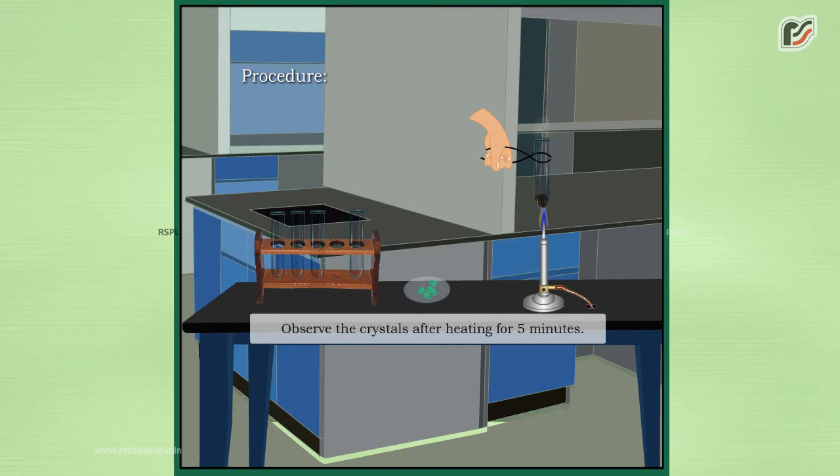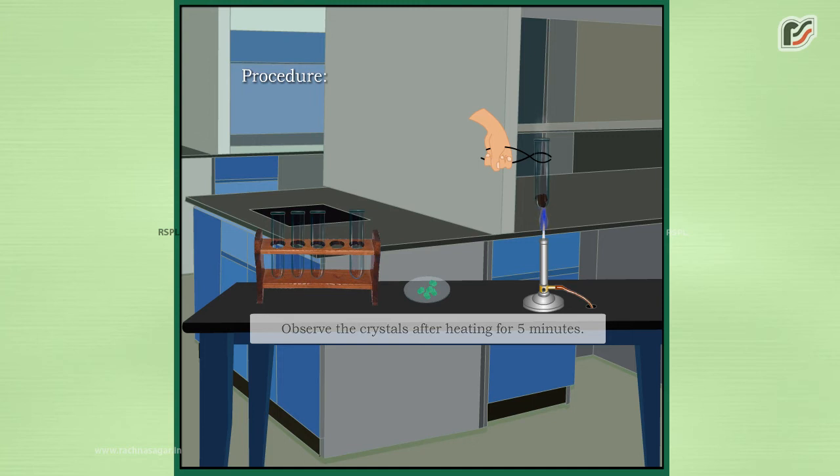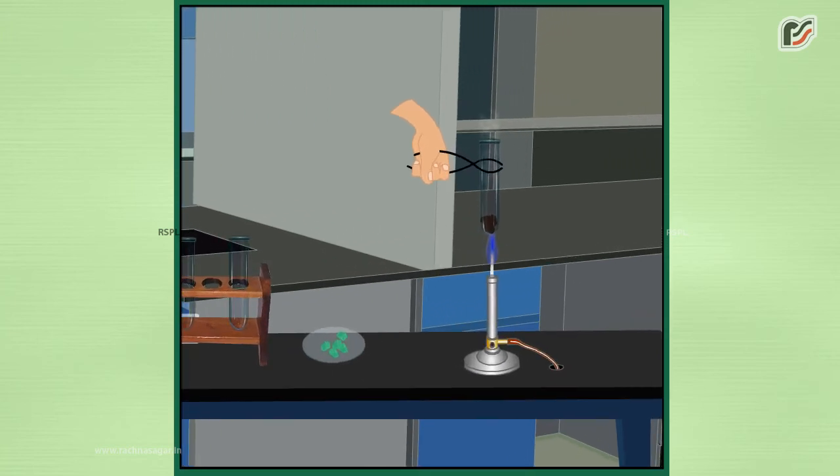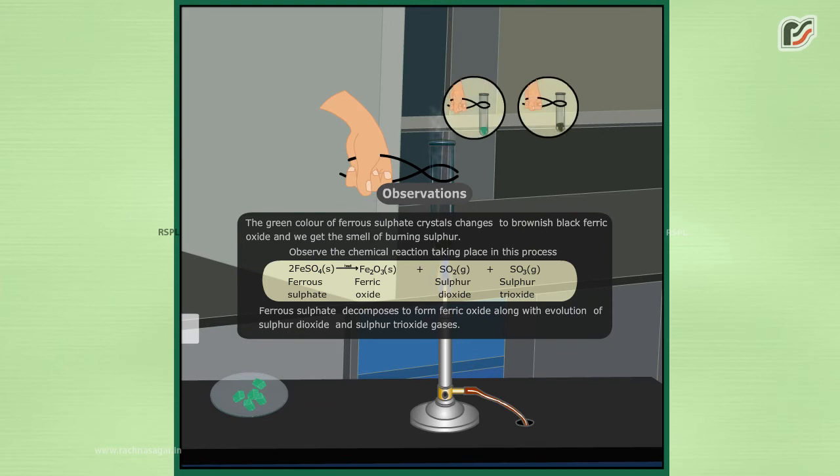Observe the crystals after heating for 5 minutes. Observation: The green colour of ferrous sulphate crystals changes to brownish black ferric oxide, and we get the smell of burning sulphur.